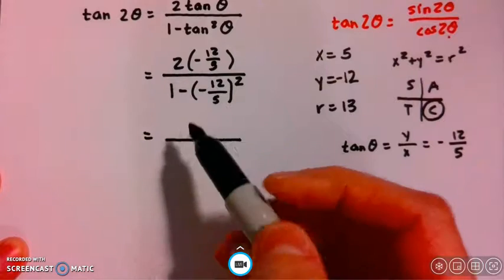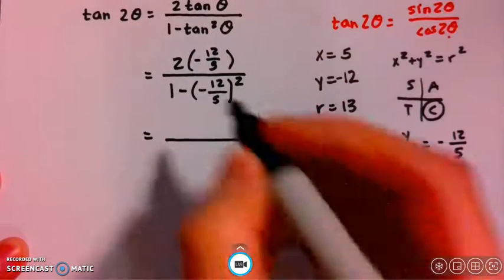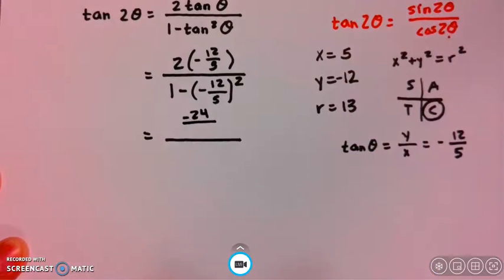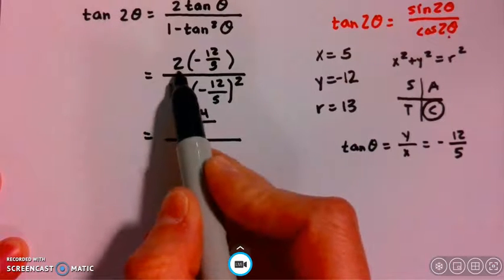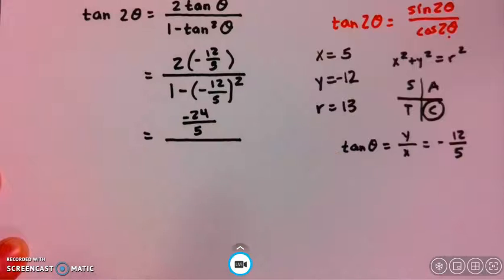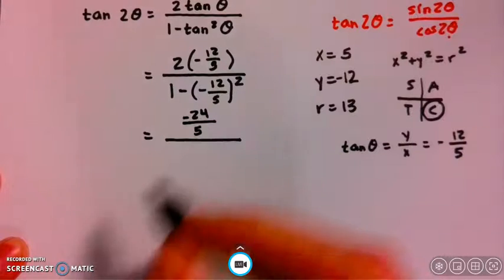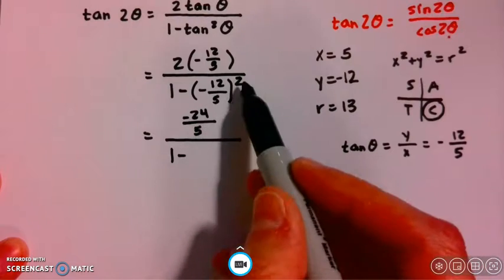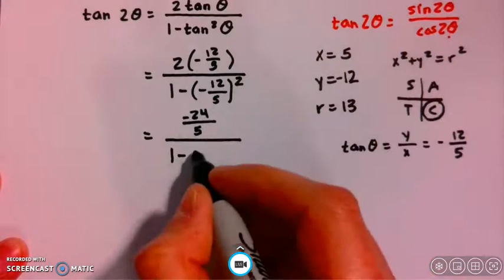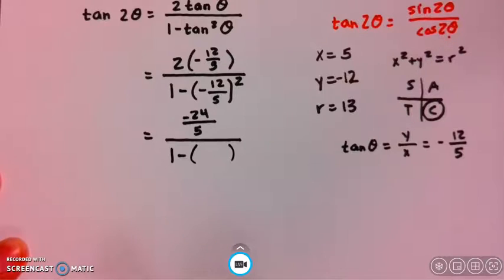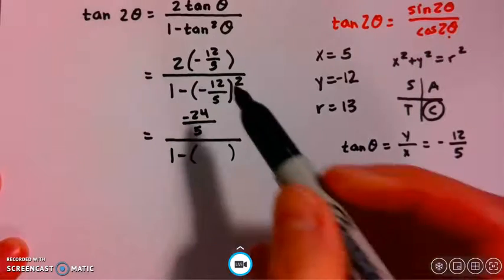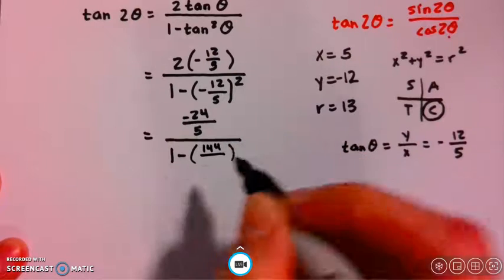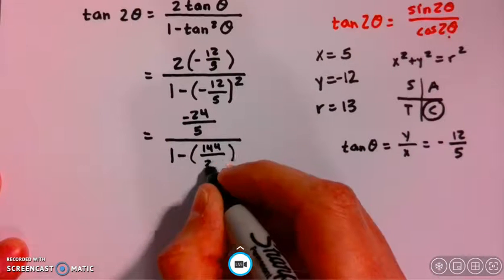This is just 2 over 1, so 2 times negative 12 gives me negative 24, and the 1 in the denominator times 5 gives me 5. In the denominator, I'm going to do 1 minus, and square this. When I square a negative, it becomes positive, so I'll have a positive value in the numerator and denominator. 12 squared is 144.